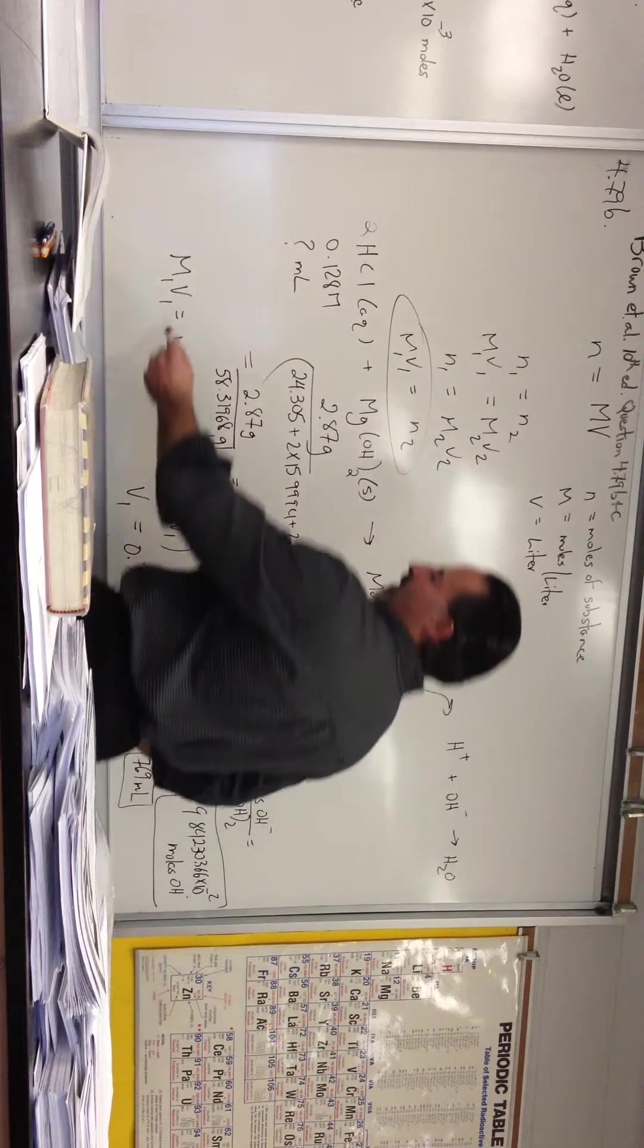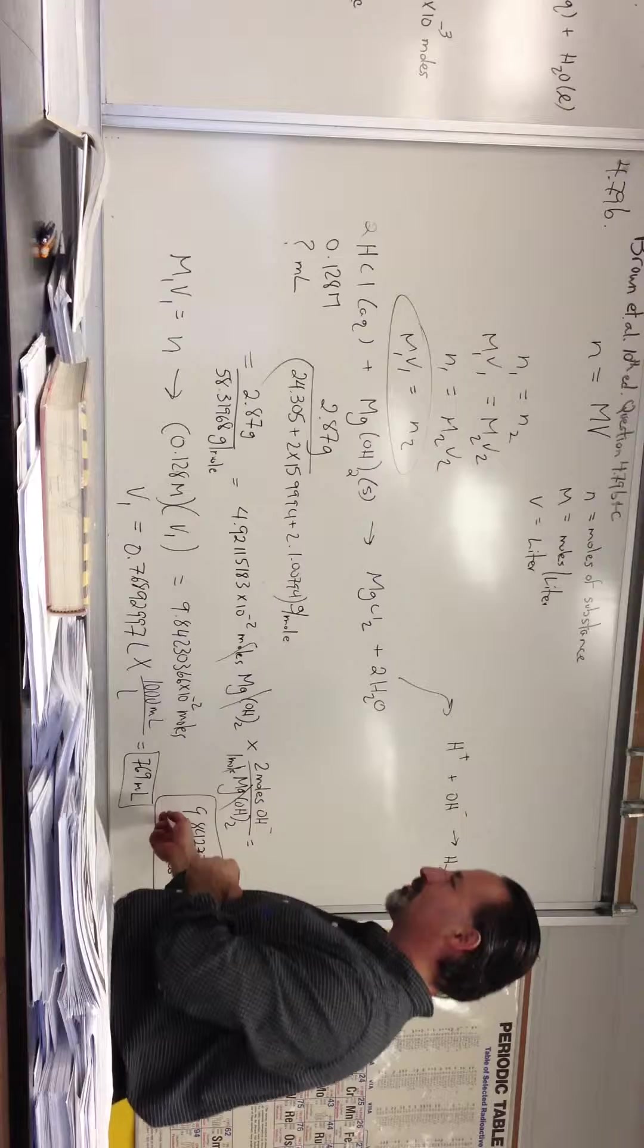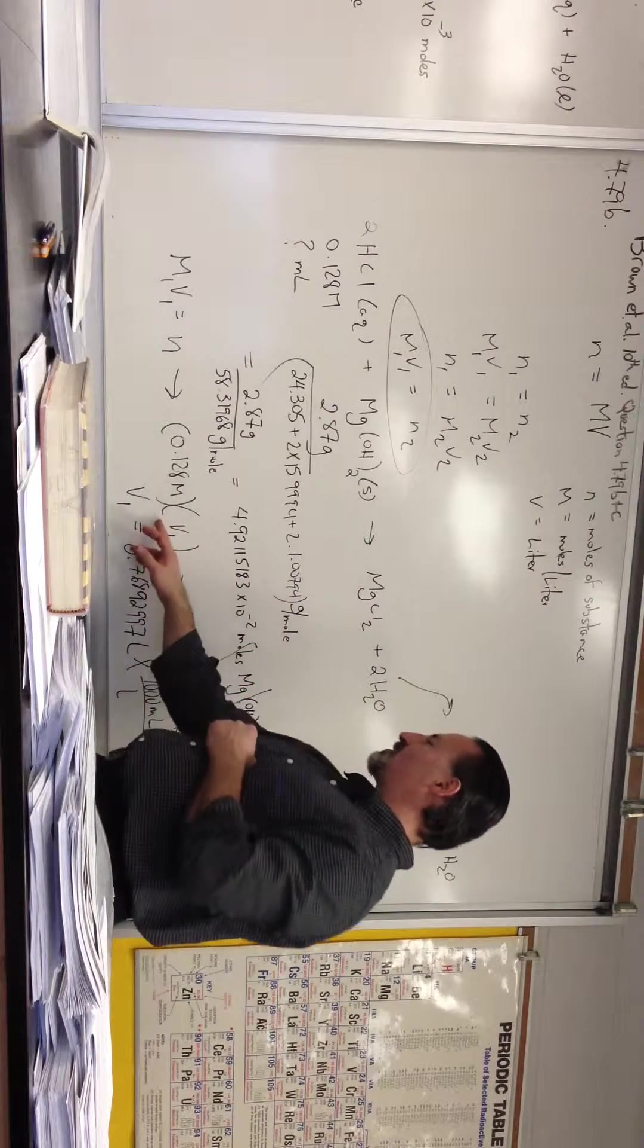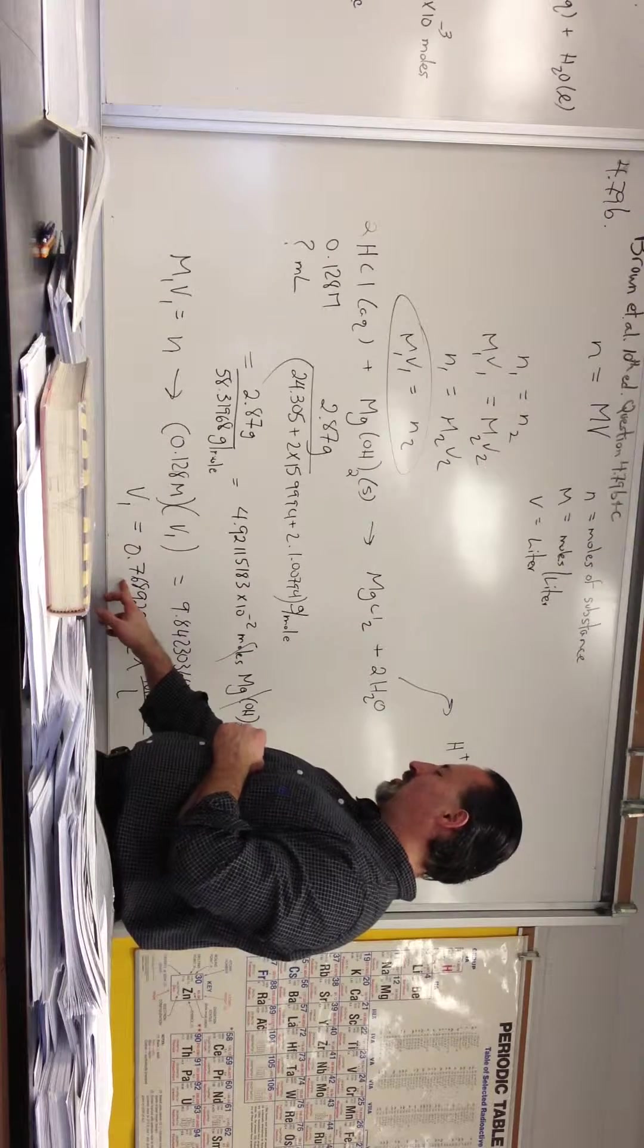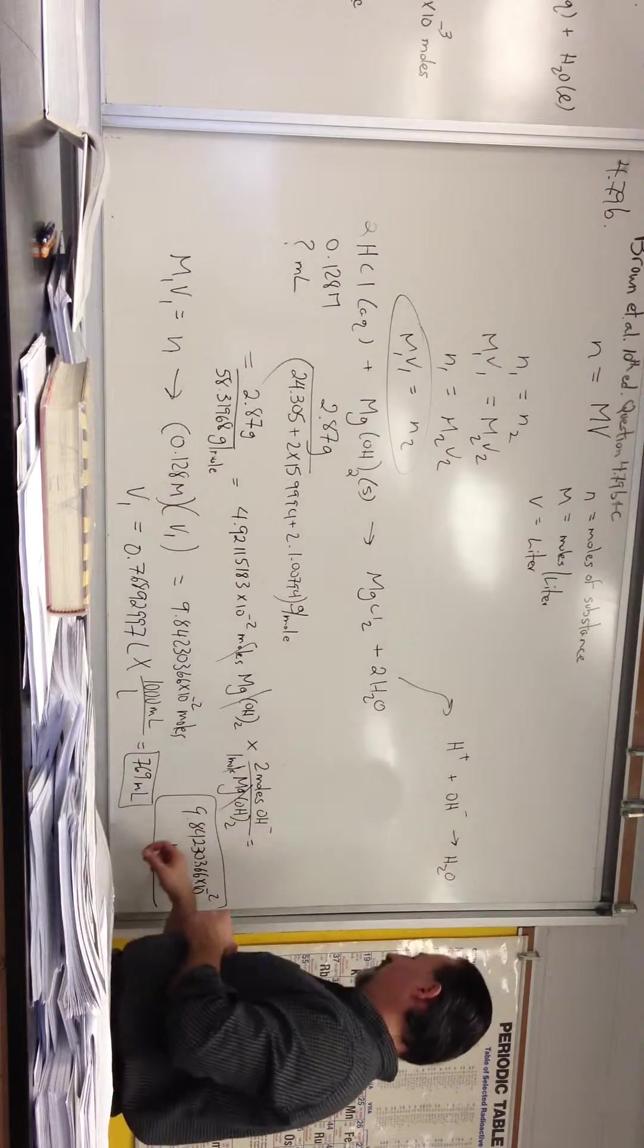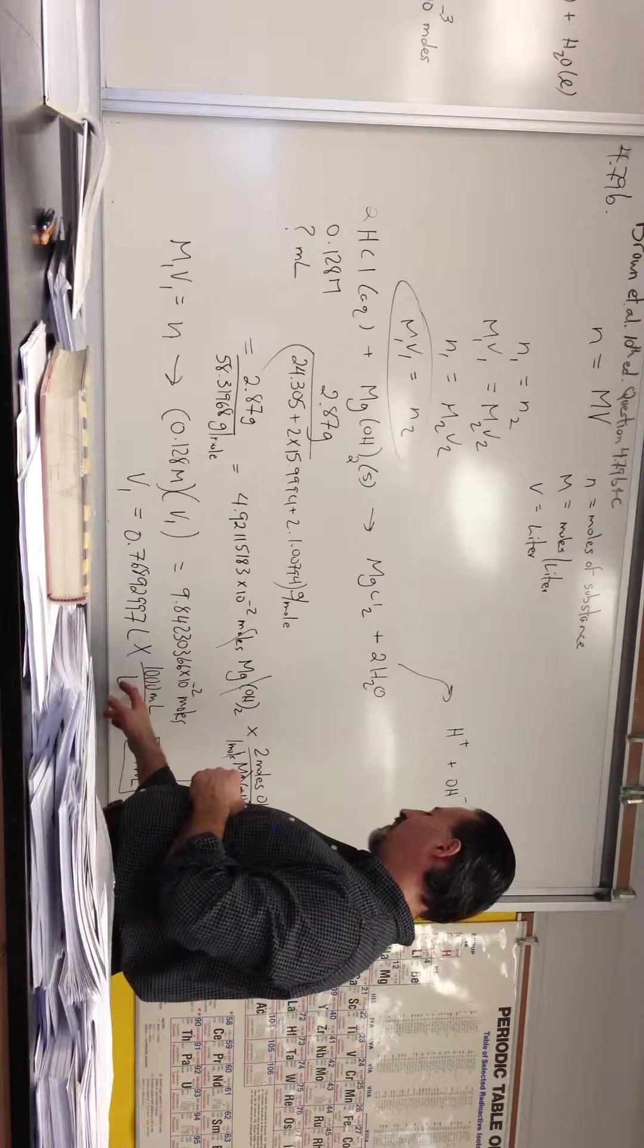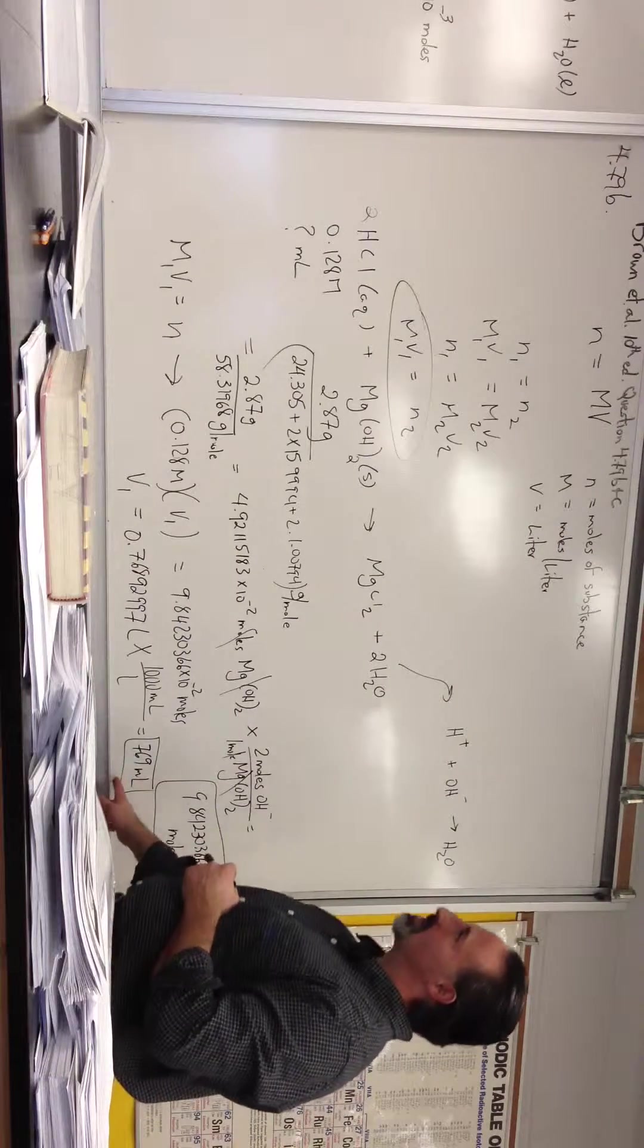Then we use our equation. M1V1 is equal to N. We already know N, we just calculated it. Here, we know M is 0.128. So the only thing that's missing is V1. We plug in all the numbers, we isolate V1, we find that it takes 0.768 liters of the hydrochloric acid solution to titrate that many moles of hydroxide. And because our answer is in liters, we can convert it to milliliters by multiplying by 1,000. So we get 769 milliliters. It's only three significant figures allowed, so that's how we report it.